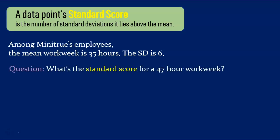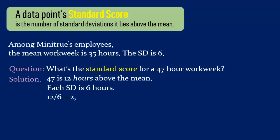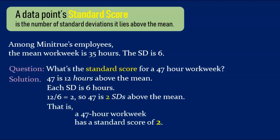So, what's the standard score for a 47-hour workweek? Well, the standard score of this data point, 47 hours, is by definition the number of standard deviations it lies above the mean. 47 is 12 hours above the mean, and each standard deviation is 6 hours. 12 divided by 6 is 2, so 47 is 2 standard deviations above the mean. That is, 47's standard score is 2.